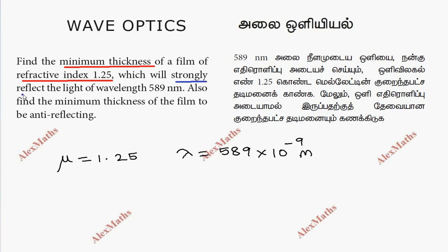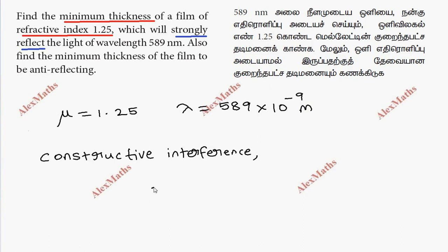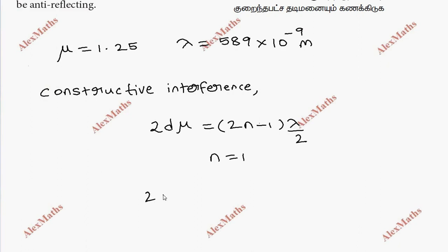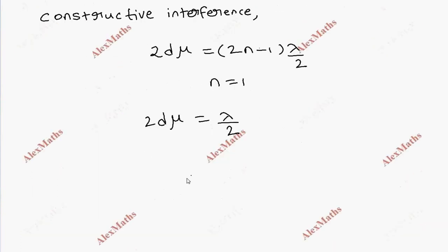For strongly reflected light, we need constructive interference. The condition, as derived in the previous video, is 2d mu equals 2n minus 1 times lambda by 2. For the first order, when n equals 1, this becomes 2d mu equals lambda by 2.